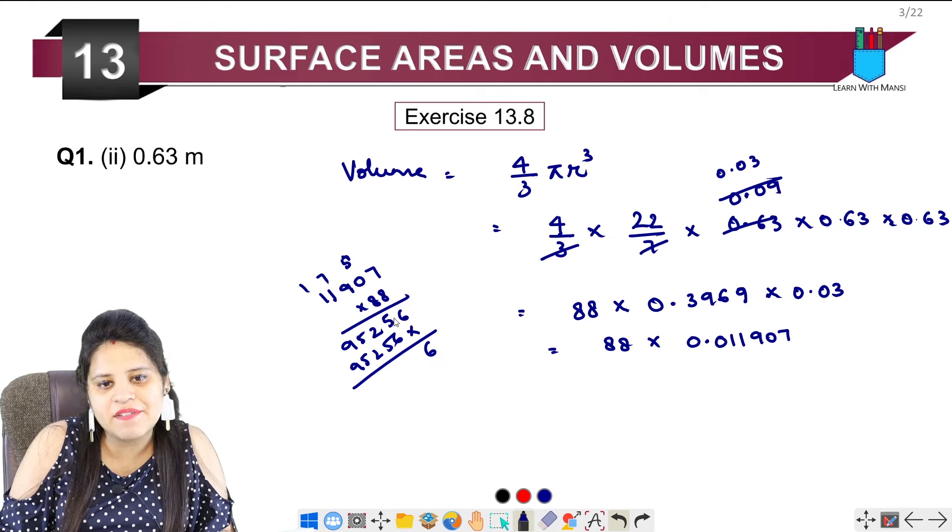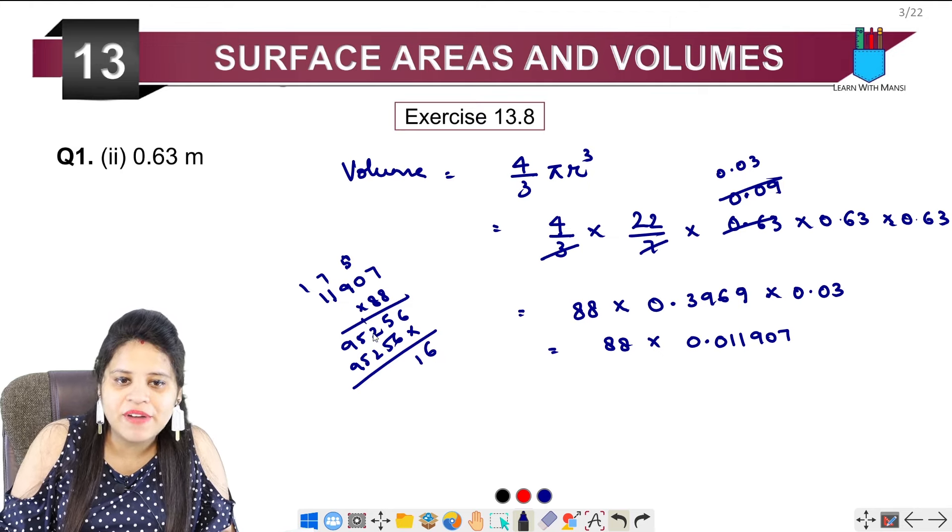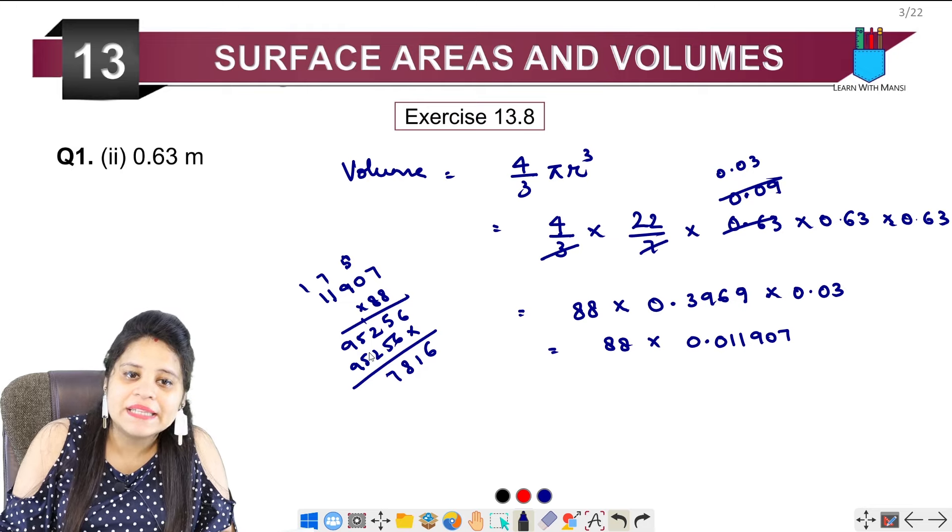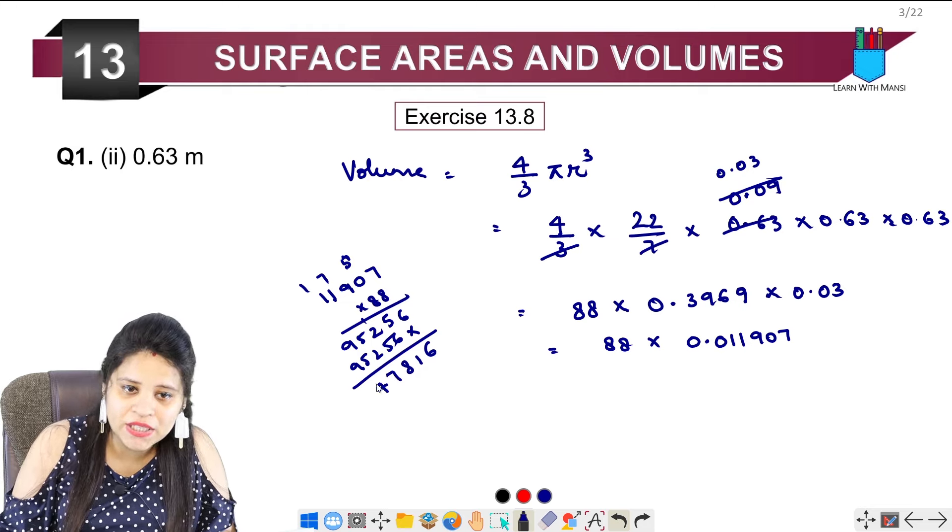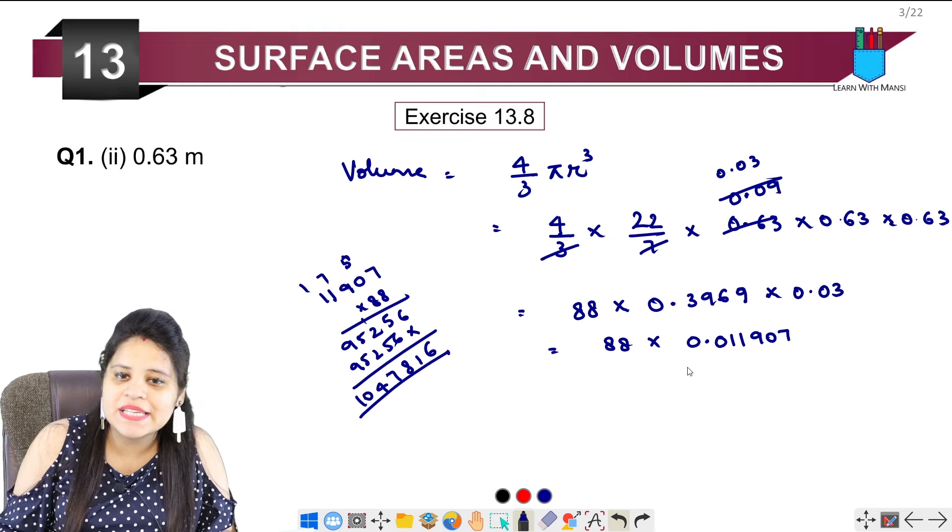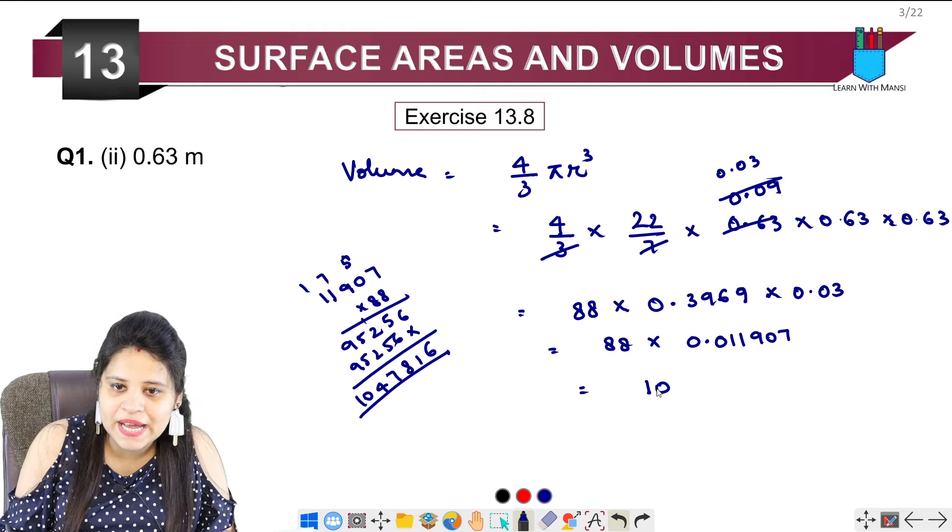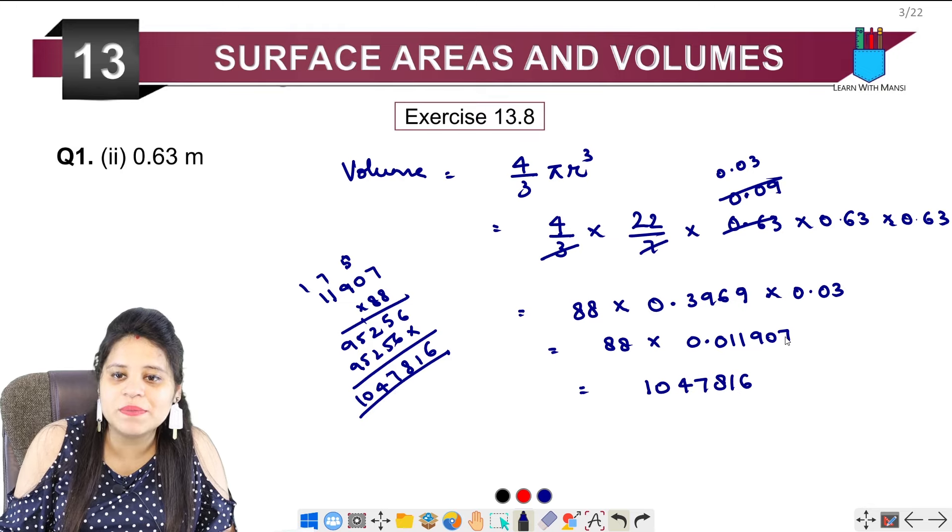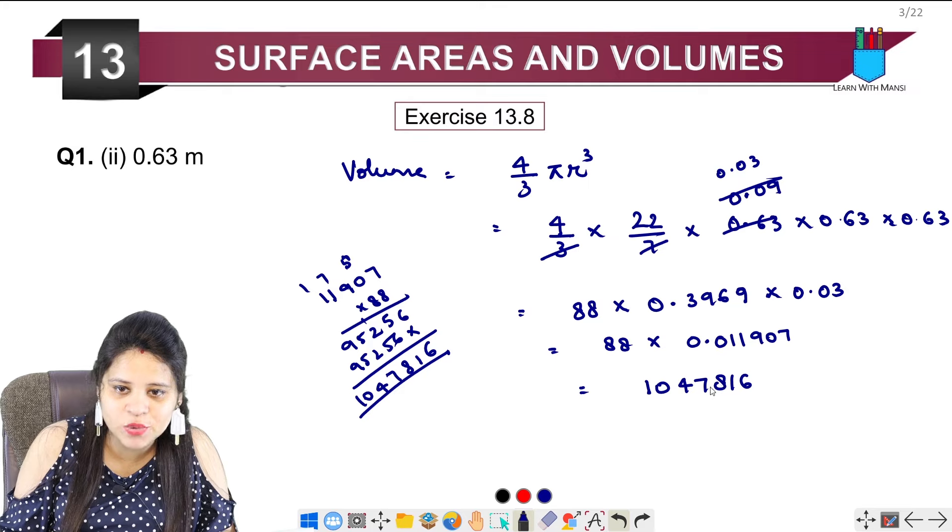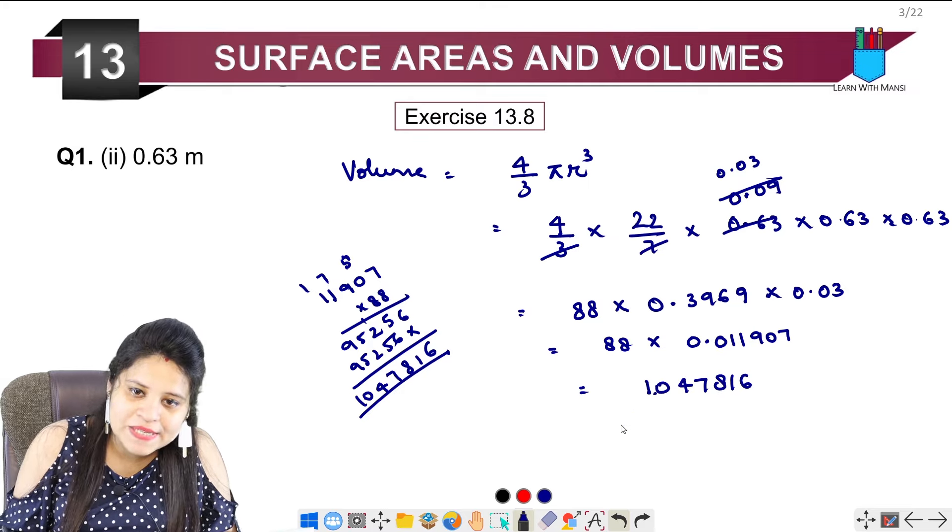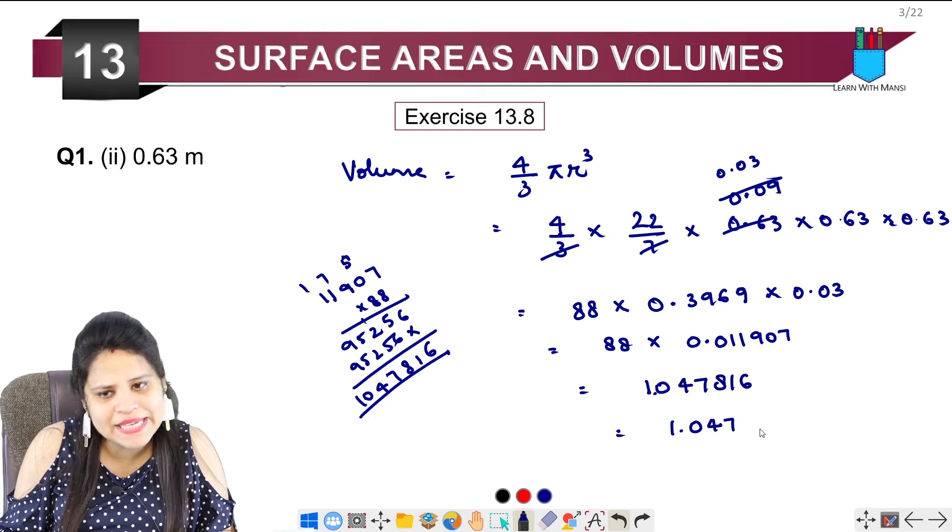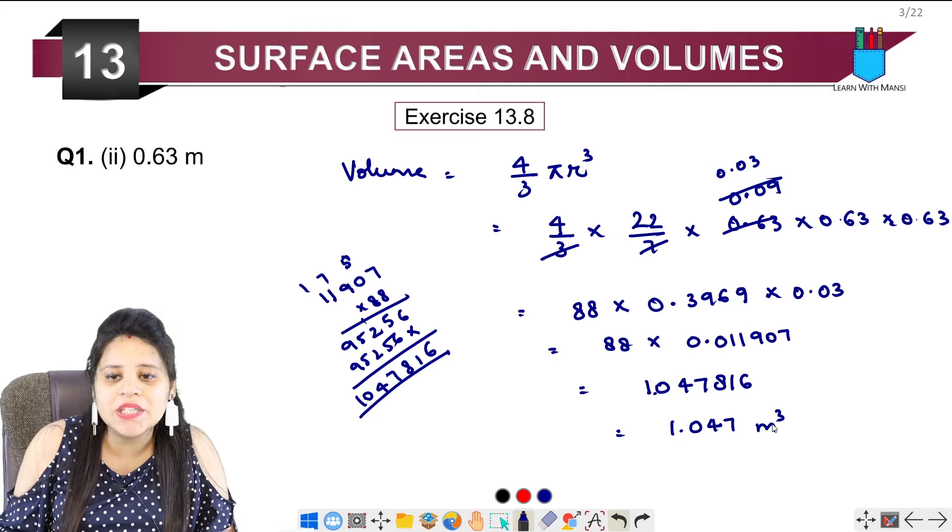Yah ho jayega 6, 7, 8, 9, 11. Then 5, 6, 7, 8. And then we have 5, 6, 7. Then 9, 10, 11, 12, 13, 14. And 10. Yah hamare paas multiply karke aagaya 10, 4, 7, 8, 1, 6. Decimal lagna hai 1, 2, 3, 4, 5, 6 places pehle, matlab yah aayega 1.047. Itna bhi likh denge chalega. Yah hai meter cube.